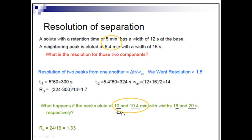So we have retention time tR1 and tR2, and the widths. Let's calculate the average width by adding 16 and 20 together, which is 36, divided by 2. That means the average width W is 18 seconds. Now, tR2 minus tR1 gives us 0.4 minutes. We need to convert this to seconds by multiplying by 60, because 1 minute equals 60 seconds, which gives us 24 seconds.